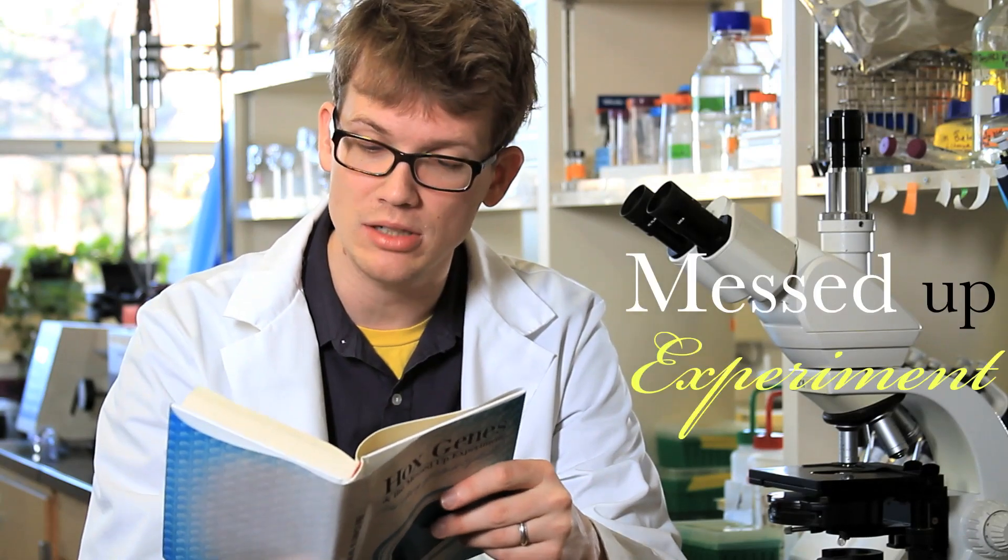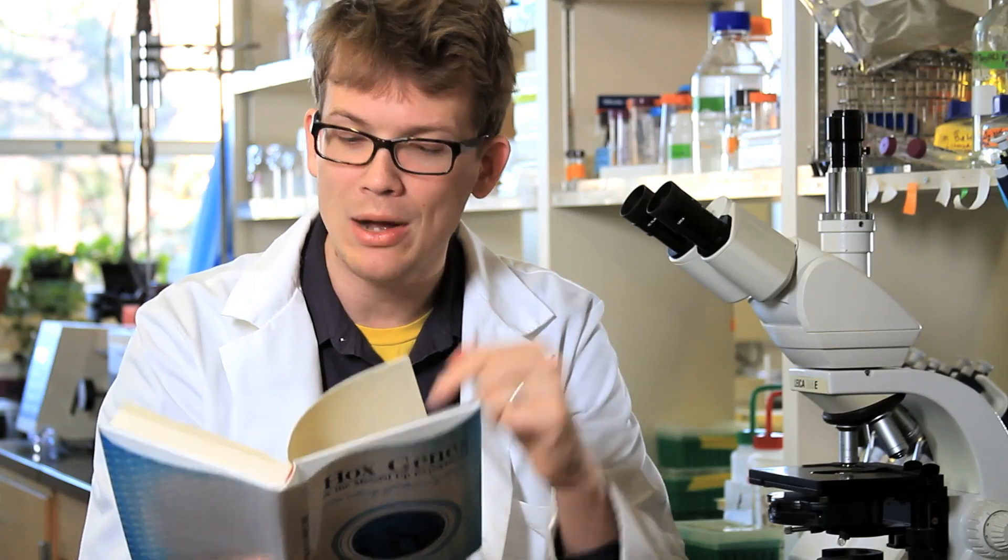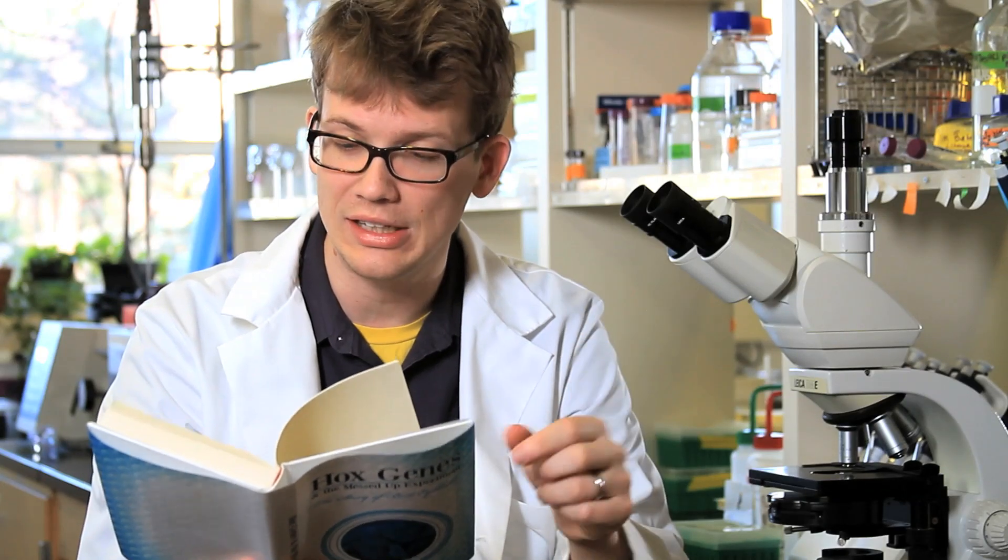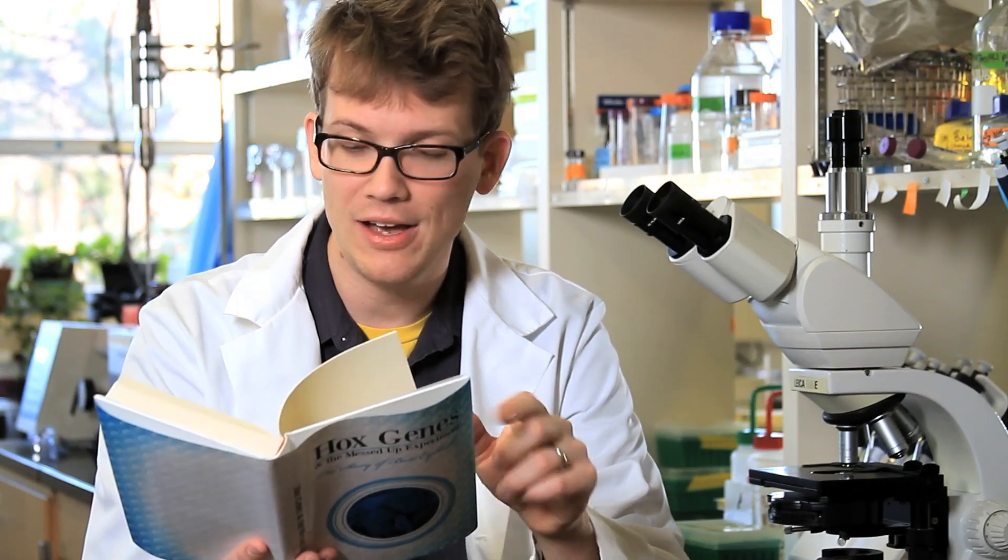Okay, you've been very patient, my students, so I've got a surprise for you. We're going to make some butt eyeballs. In 1995, in a very cool and also totally messed up experiment, a team of researchers in Switzerland took a hox gene from a mouse embryo, one that said, eye goes here, and inserted it into the DNA of a developing fruit fly embryo.